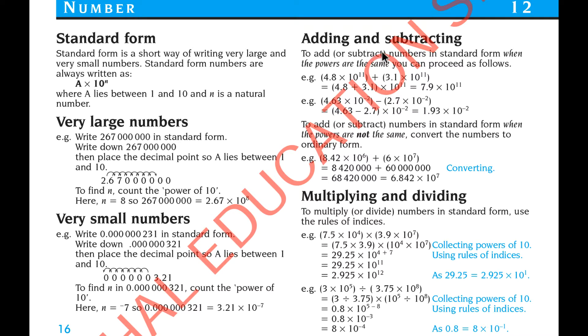Now think how you are going to add and subtract these standard form questions. To add or subtract numbers in standard form, when the powers are the same, you can proceed as follow. For example, 4.8 multiplied 10 to the power 11 plus 3.1 multiplied 10 to the power 11. So always to add or subtract, always make sure their powers are same. So here powers are same, then you can continue. 4.8 plus 3.1, so answer is 7.9 times 10 to the power 11.